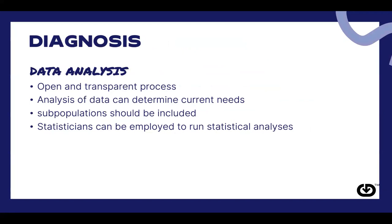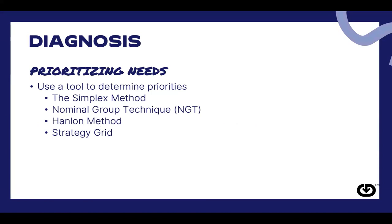Moving on to diagnosis — when identifying the issue with a community, the first thing we look at is data analysis. Data analysis should be an open and transparent process that determines the community's current needs. Subpopulations should be included so that all people in a community are represented, and it's recommended that statisticians are employed to run statistical analyses. Every community has multiple healthcare needs, and determining which ones to work on can be a challenge since people can have different opinions, so there are four tools to help determine priorities.